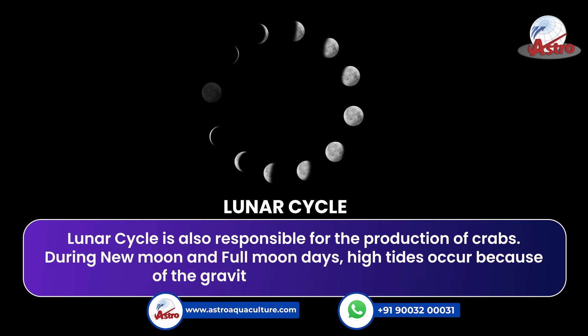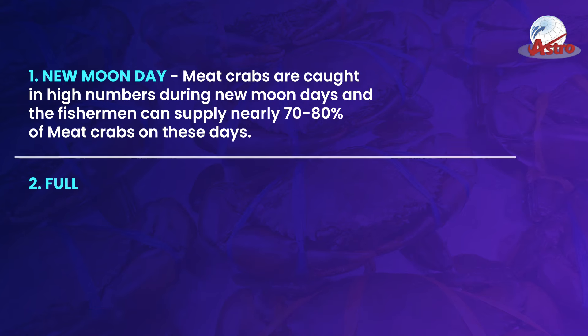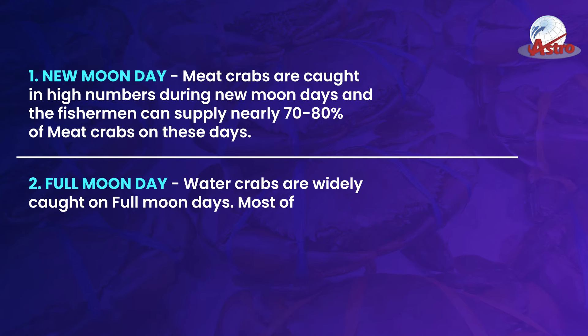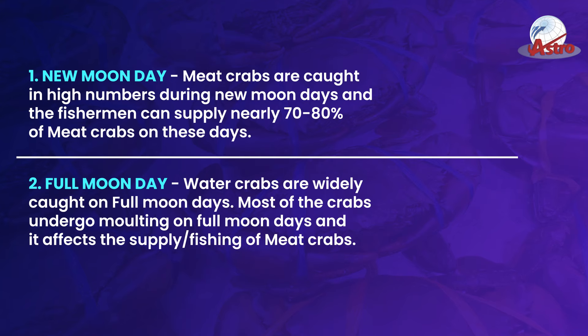Based on the force of the tides, the production of mud crabs varies. When tides are high, fishermen catch crabs in larger quantities, and it reduces during lower tides. The lunar cycle is also responsible — during new moon and full moon days, high tides occur due to the gravitational pull of the moon.